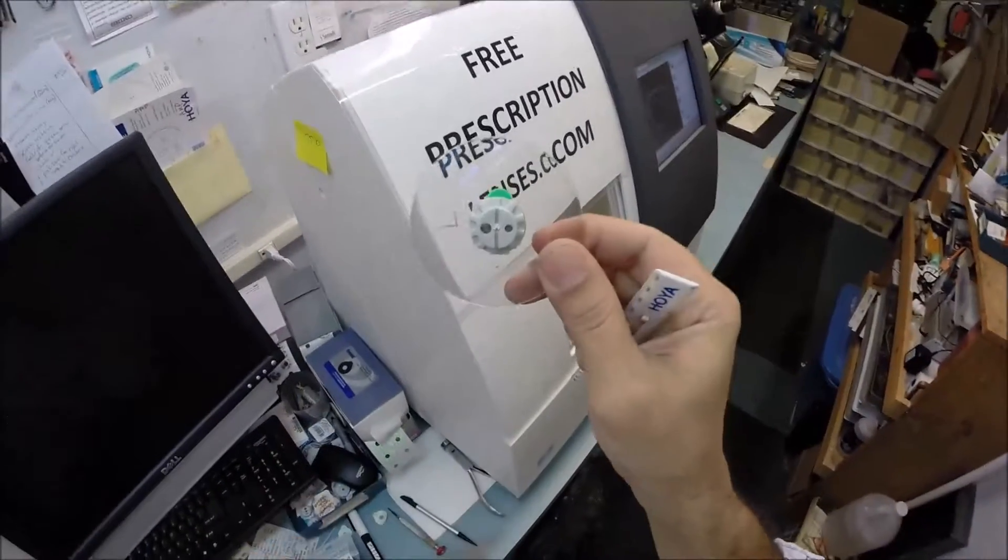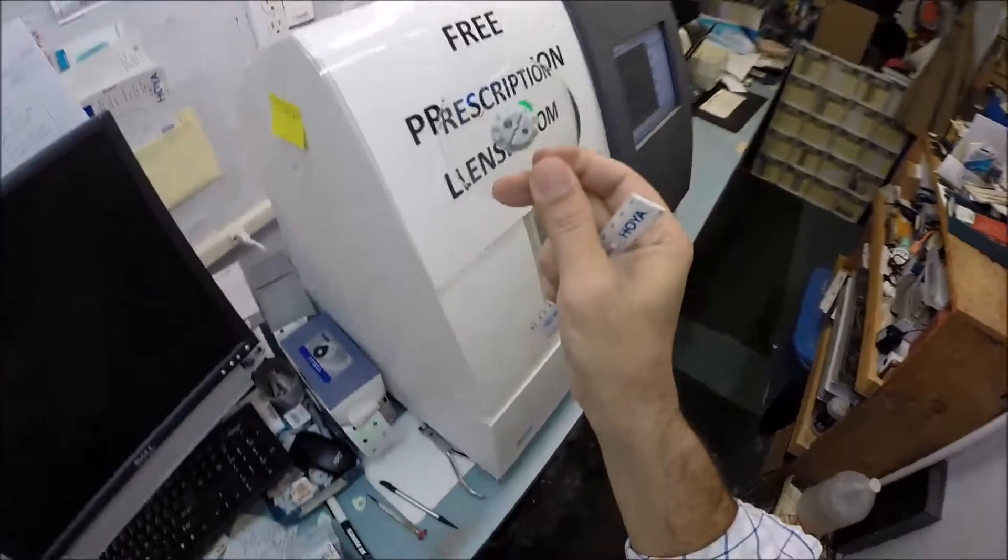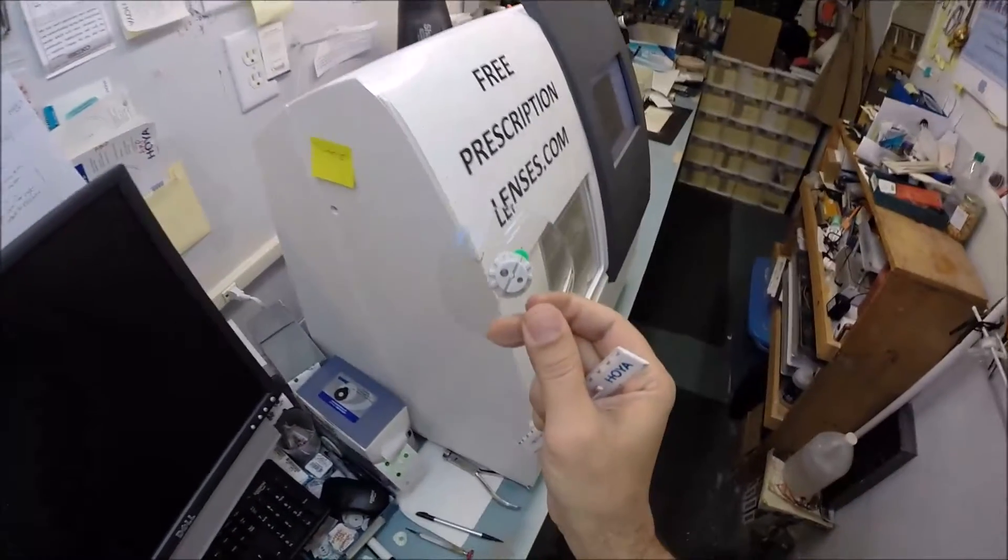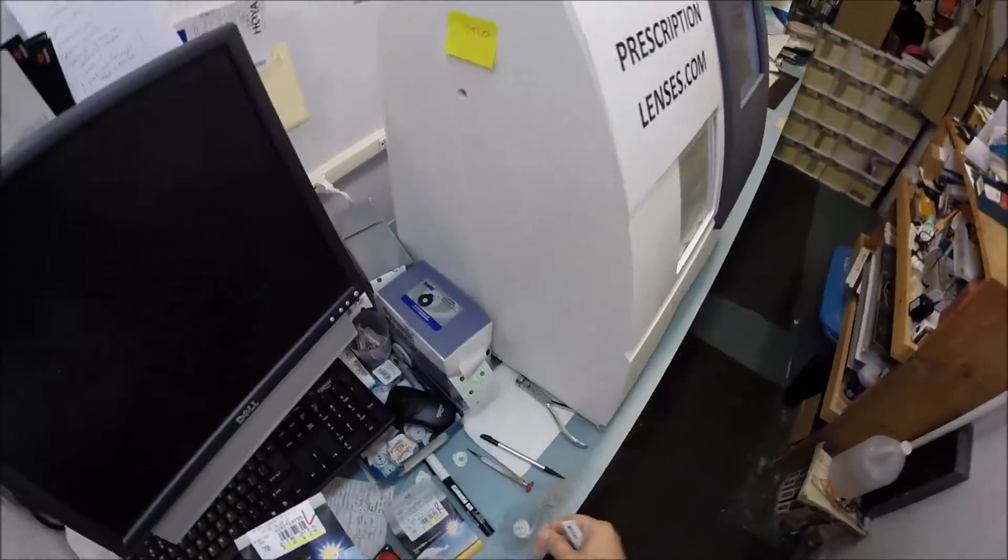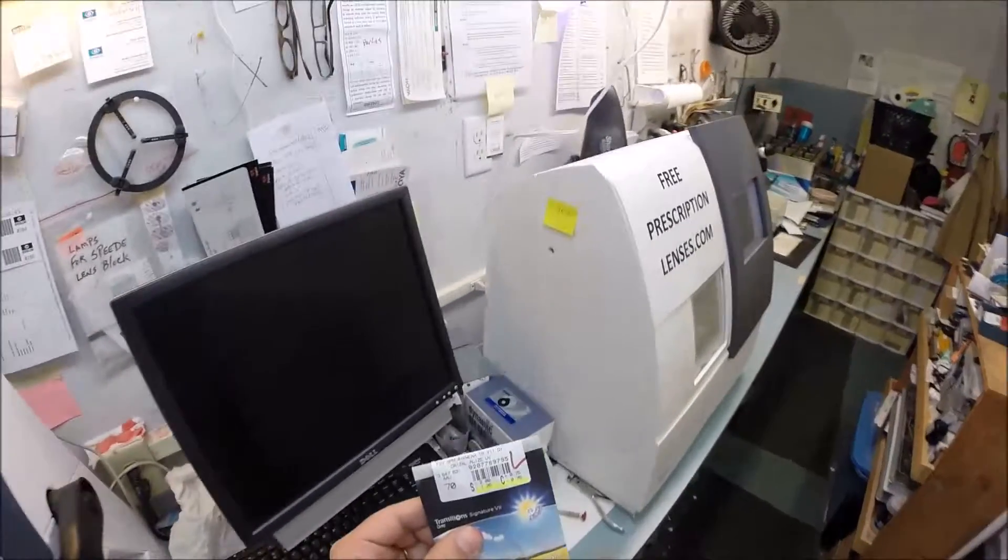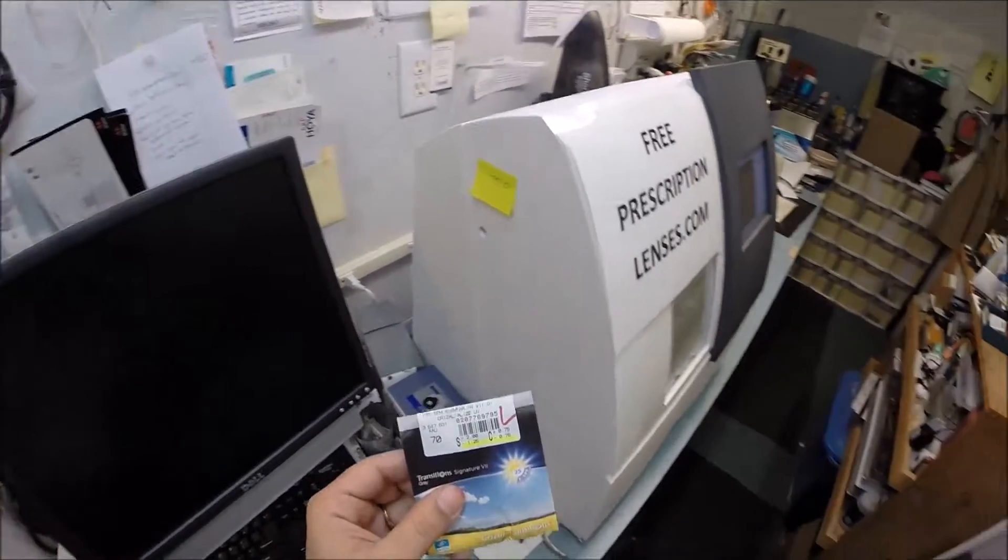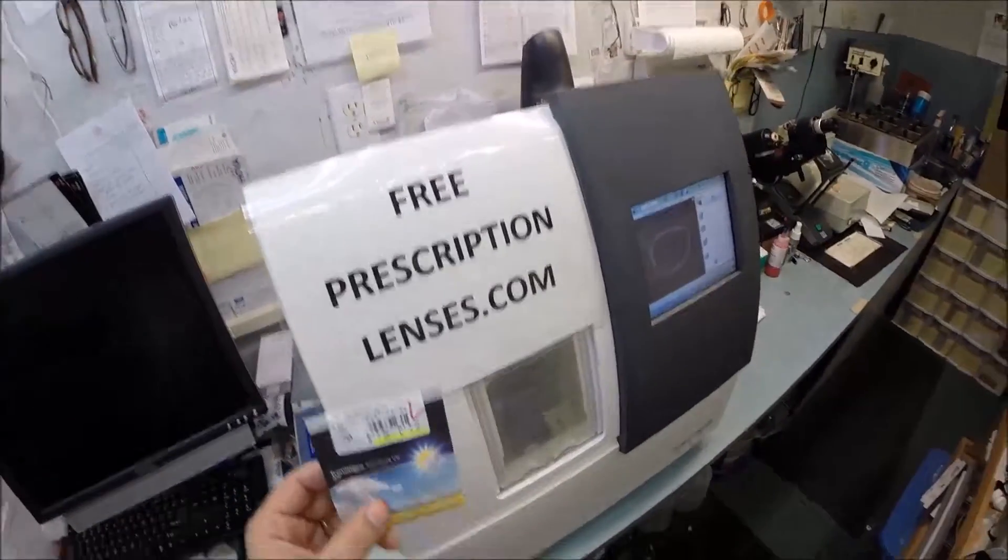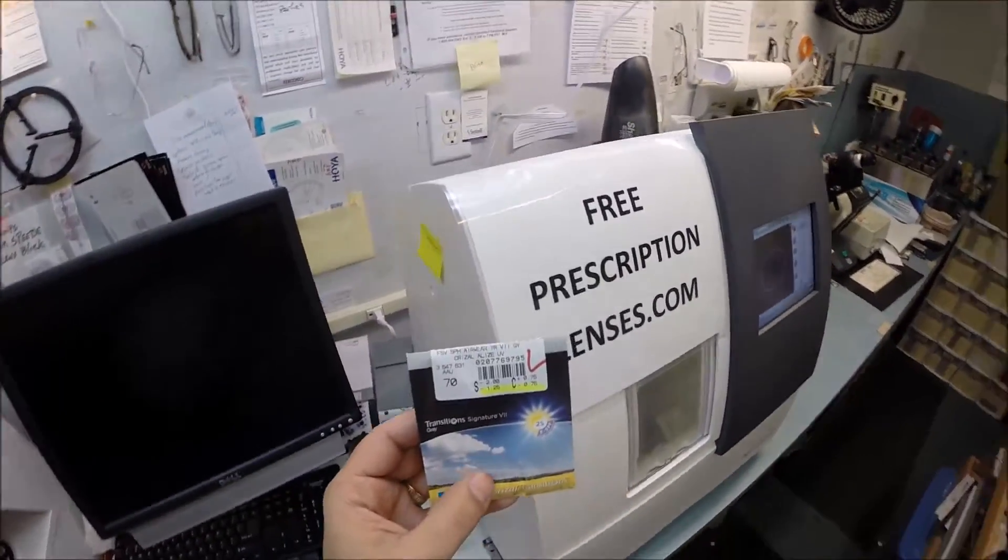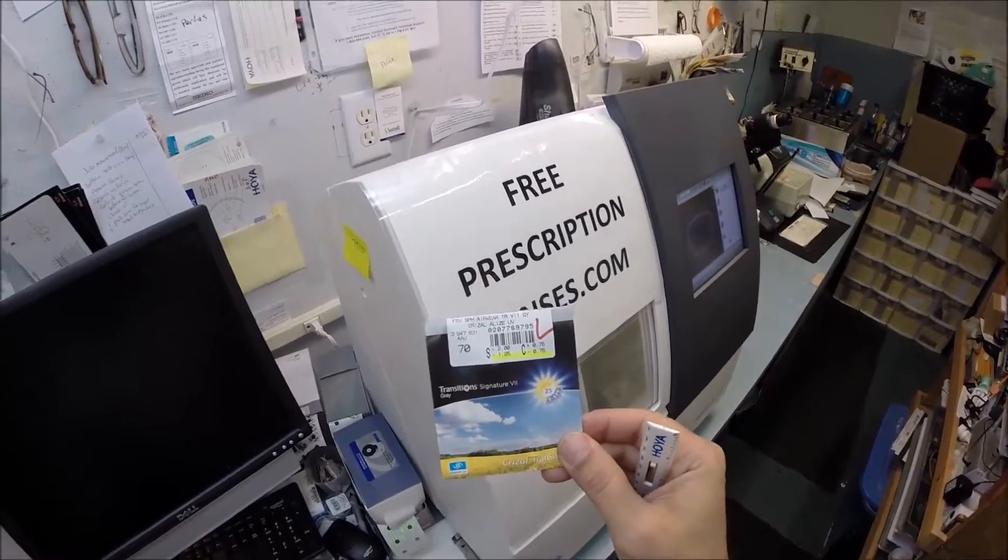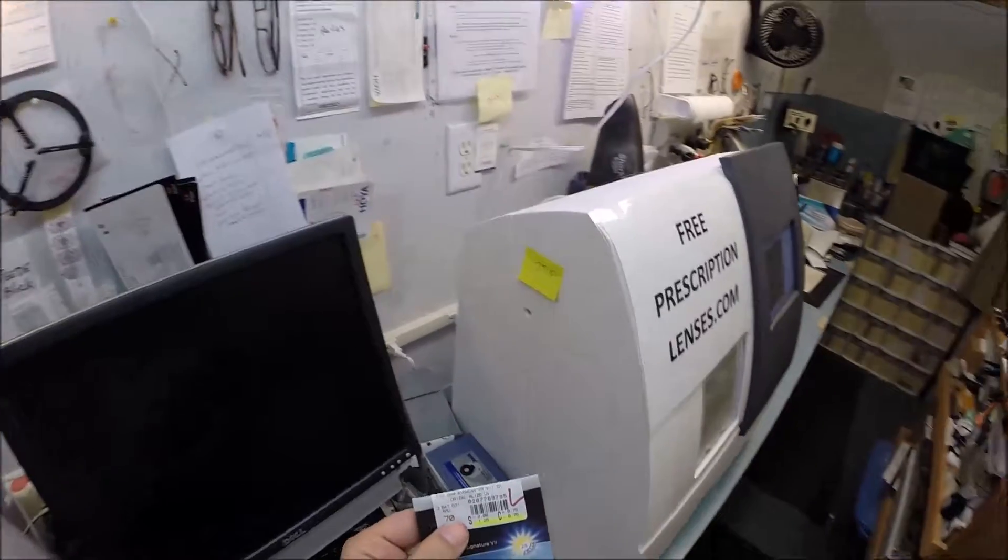Your lenses are made out of polycarbonate. This brand calls it air wear. Polycarb is 40% thinner and lighter than regular plastic. It is also virtually unbreakable. Your lenses are bulletproof up to 22 caliber and have both UVA and UVB protection.